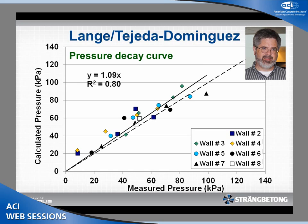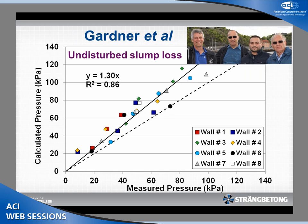Unfortunately, the tube didn't work on the first day's casting, so we have results for only seven of the walls. But also, if you check what's happening in the slump cone — just to see how the slump flow reduces with time as the concrete rests — you also have a very good prediction: a slope of about 1.3 but a very high R-squared of 0.86.